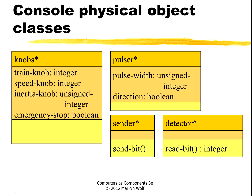Now let's build some more detailed classes. We have physical classes for the knobs: a knob to say which train we're controlling, a knob to set the speed, a knob to set the inertia, and a button for the emergency stop. The pulsar has a pulse width for the motor and a direction. We have a sender that sends a bit on the tracks, and a detector class that reads a bit from the tracks.